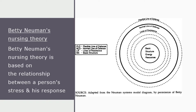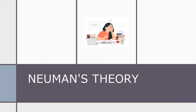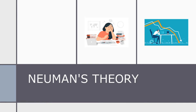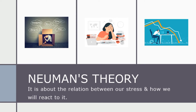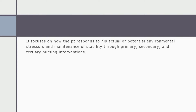Betty Neuman's nursing theory is based on the relationship between a person's stress and his response. We all have stress in our life — some have stress due to study, some due to job, some due to family life, some due to financial problems. The theory talks about the relation between our stress and how we react to it, focusing on how the patient responds to actual or potential environmental stressors.